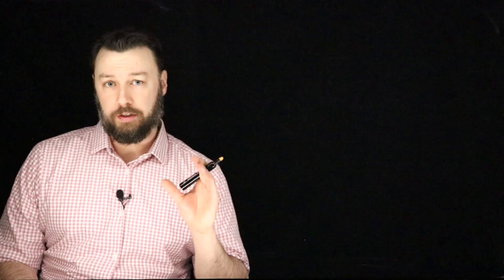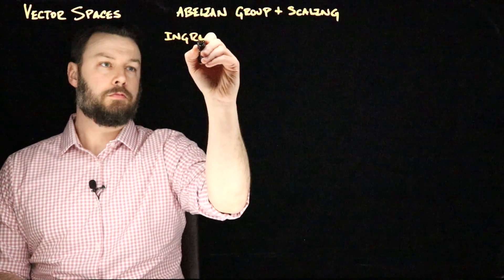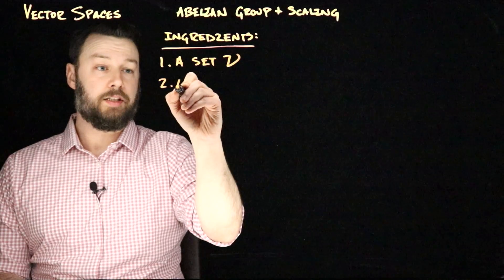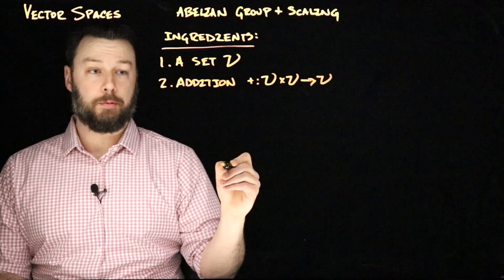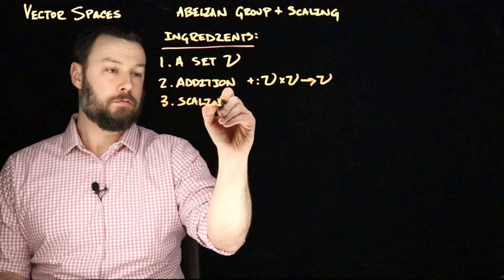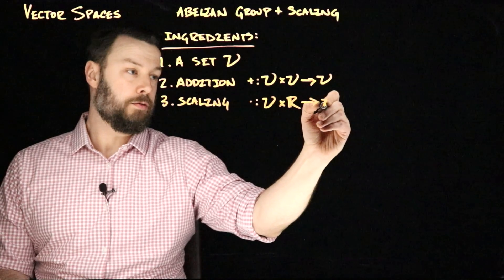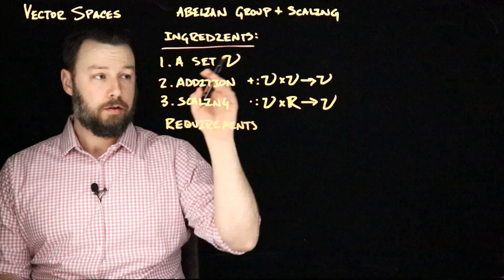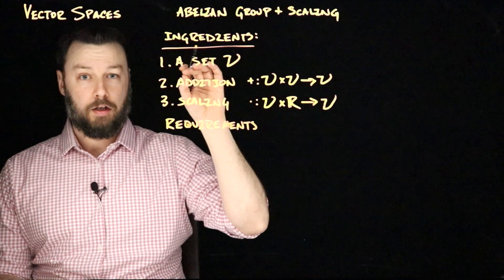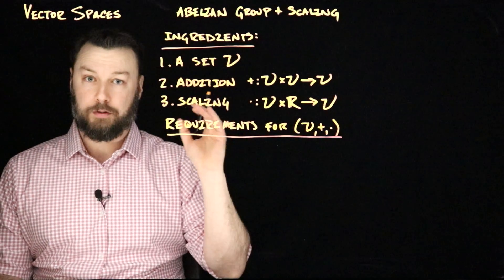Now that we know what a group is, we can formally define what a vector space is. From our point of view, we can just think of a vector space as being an abelian group that also has scaling. So we have a couple of ingredients. We have a set V. We need addition, which takes two members of V and then maps them to another member of V. And we need scaling. I'll write that operator as just a dot. And it takes a member of V and a real number and turns that into another member of V. We have a set of requirements that we need to satisfy. And these are requirements for the triplet of V, plus operator, and dot operator.